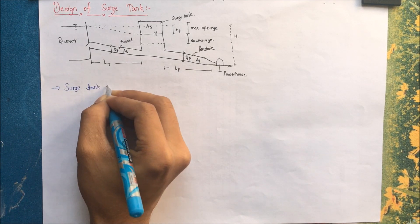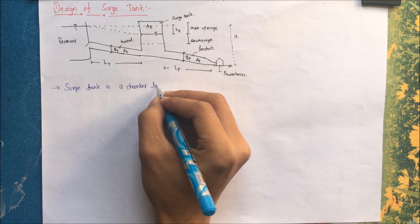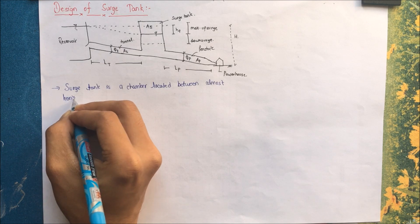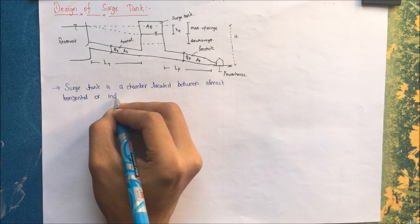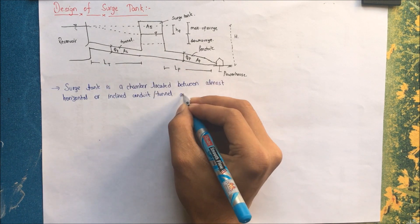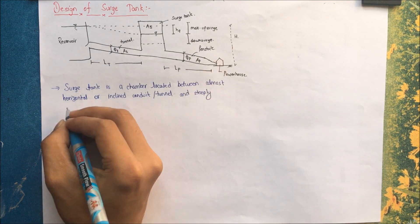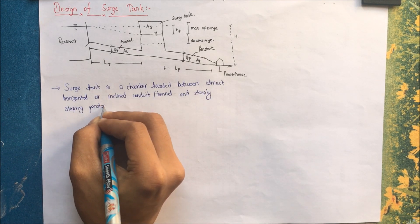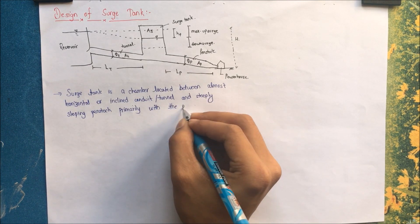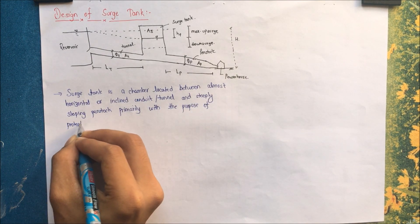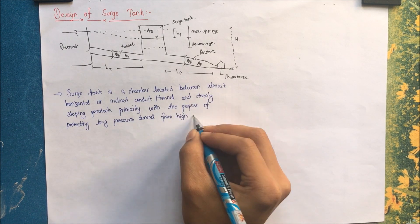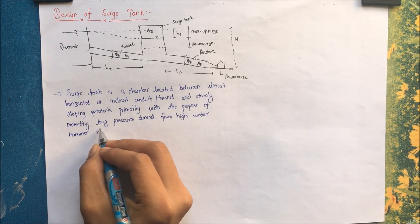A surge tank is a chamber located between an almost horizontal or inclined conduit — also known as a tunnel — and a steeply sloping penstock, primarily with the purpose of protecting the long pressure conduit (the tunnel) from the high water hammer effect.